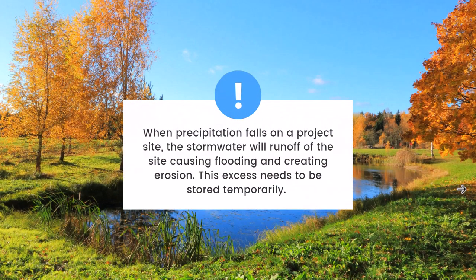When precipitation or rainfall falls on a project site, the stormwater will run off of the site causing flooding and creating erosion. This excess stormwater needs to be stored temporarily or mitigated in some way. In a natural environment, stormwater will either infiltrate into the ground and the excess will eventually run off through surface runoff. But when we add project developments such as houses, roadways, and sidewalks, there's going to be more flooding and more excess stormwater coming off that site. We need to figure out how to detain that stormwater to prevent flooding and prevent erosive flow ranges.